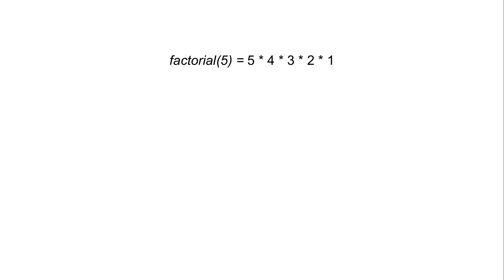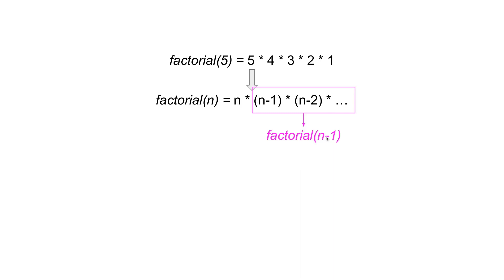I'd like to show you the formal definition of recursive behavior using a function that's quite common in mathematics and computer science — that's the factorial. Factorial of 5, for example, is equal to 5 times 4 times 3 times 2 times 1. We can generalize this to factorial of n, which equals n times n minus 1 times n minus 2 and so on. We can notice that n minus 1 times n minus 2 and so forth is itself the definition of factorial of n minus 1.